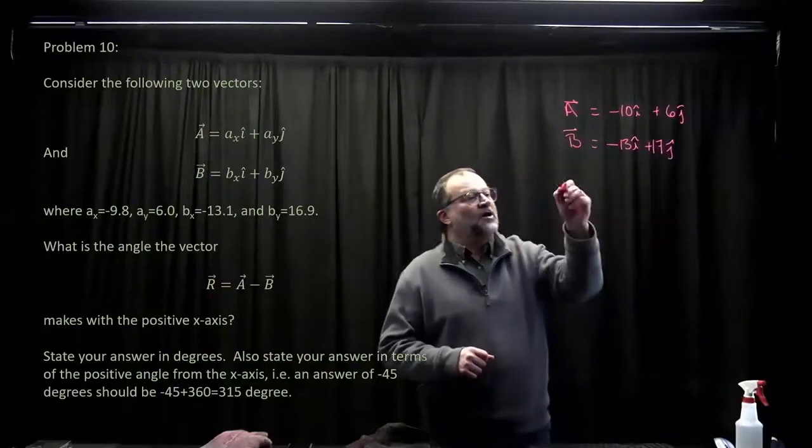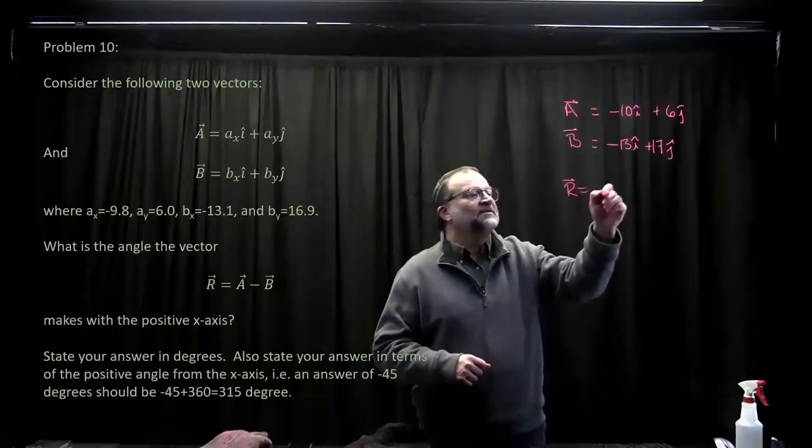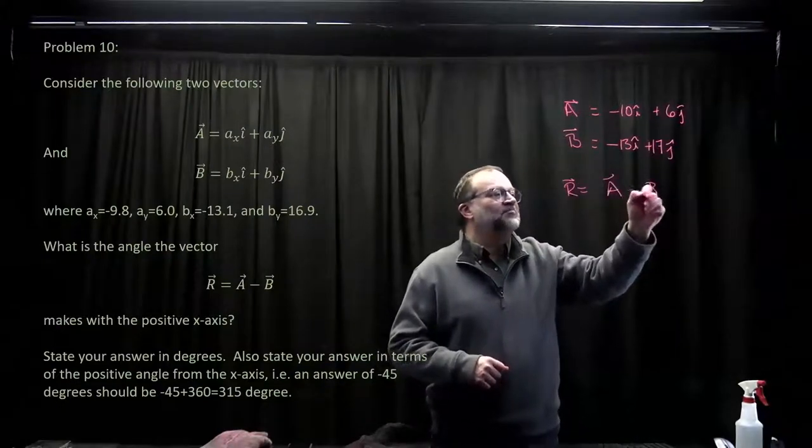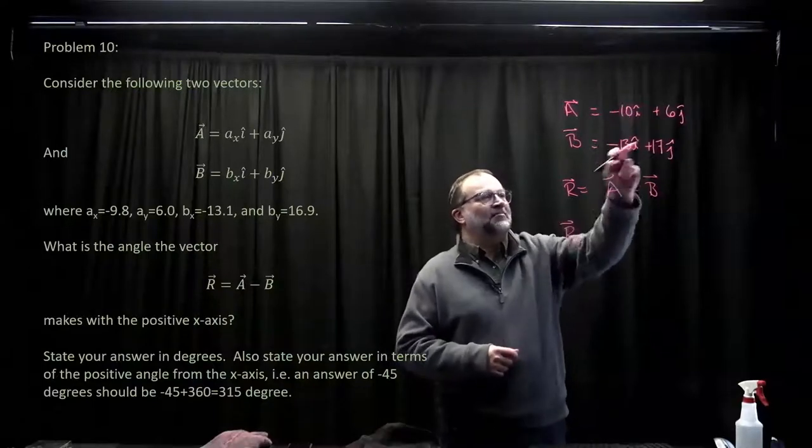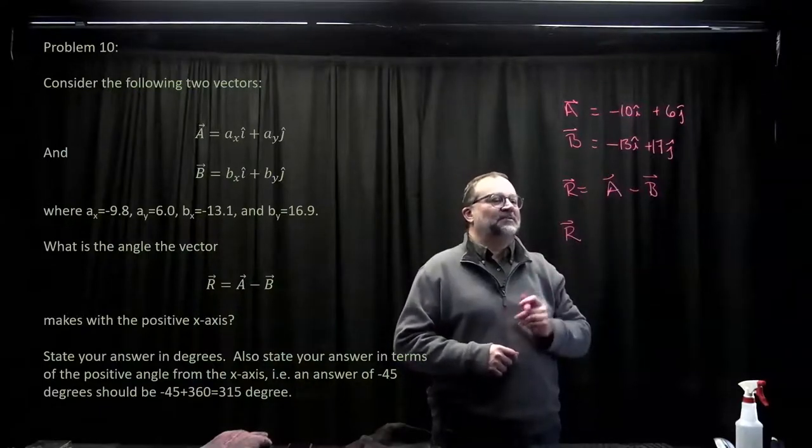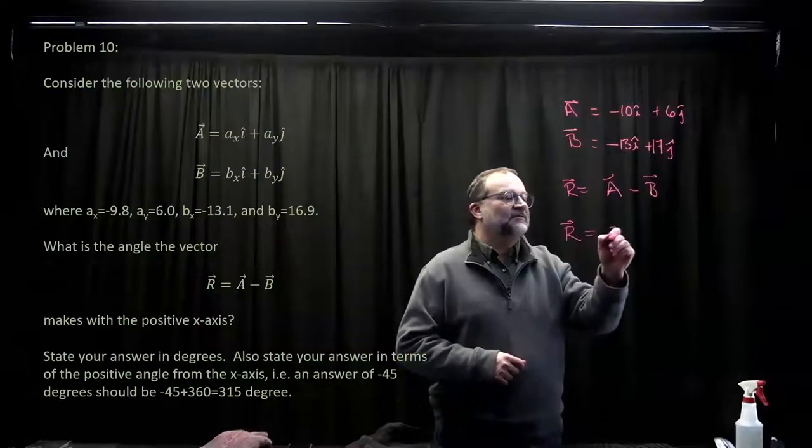OK, r is a minus b. So what's r? a is minus 10, minus negative 13, so that's going to be 3 i-hat.